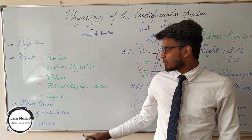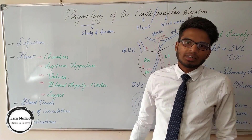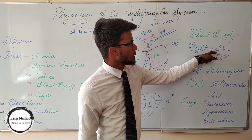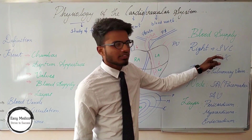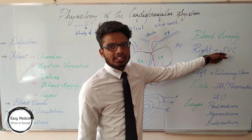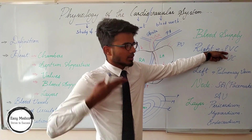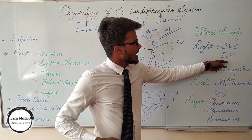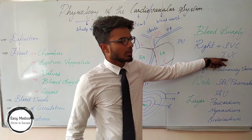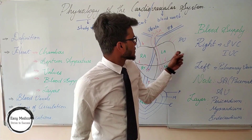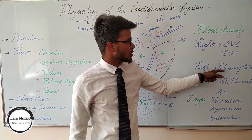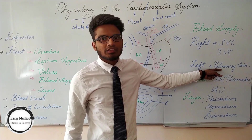We will discuss the blood supply to the atria. To the right atrium, blood is supplied through the superior vena cava and inferior vena cava. The superior vena cava collects the deoxygenated blood from the parts above the body, and the inferior vena cava collects the deoxygenated blood from the parts below the body. To the left atrium, blood is supplied through the pulmonary vein from the lungs.